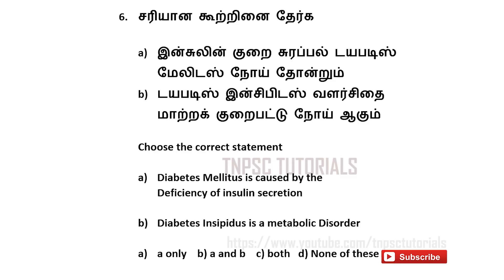Sixth one. Choose the correct statement. One: Diabetes mellitus is caused by the deficiency of insulin secretion. Two: Diabetes insipidus is a metabolic disorder. Options: A) One only, B) Two only, C) Both one and two, D) None of the above. And the answer is C — both one and two.